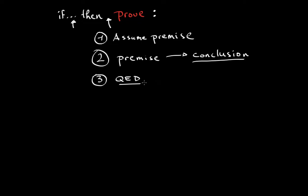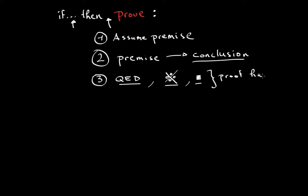When doing proof by contradiction, in certain texts and by certain professors, they use a symbol — a large X with little circles around it. I don't use this, so you will probably not see me using it. Another notation is a filled square. These are all ways to say that the proof has ended.